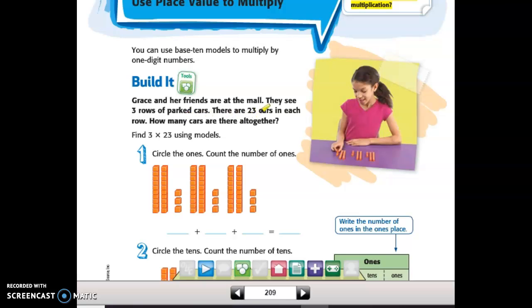Okay, in order to solve this, one thing I need to know is three rows of parked cars. Another thing I need to know is 23 cars in each row. And the question is how many cars are there altogether? My keyword being altogether.